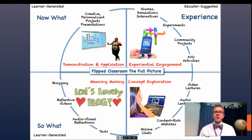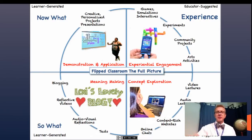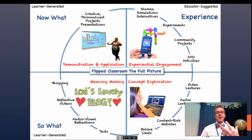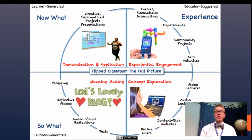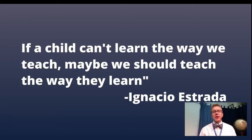If you look at Jackie Gerstein's ideas, she's got these four quadrants of experience: what, so what, now what — this idea of taking experiments and interactive things, experiential engagement, and students' background, scaffolding upon that into exploring a new concept, then applying and making meaning out of that, and then demonstrating to the class — and also to their parents now with these new options — what they've been doing and learning, and not just learning facts but applying them.